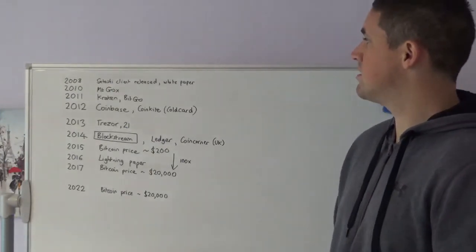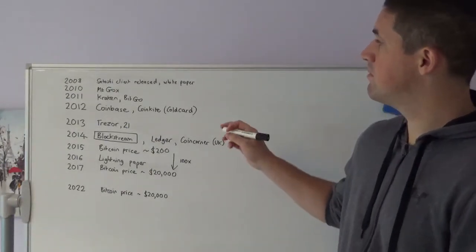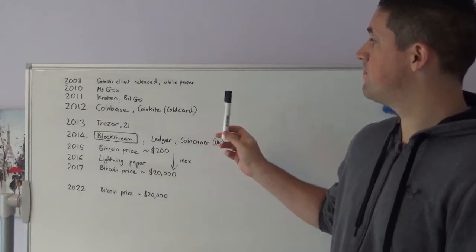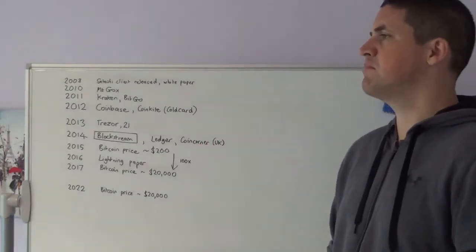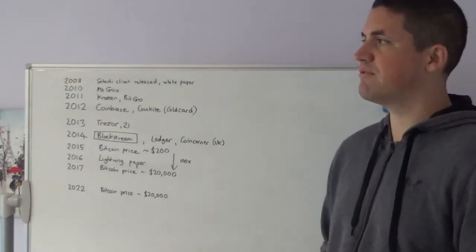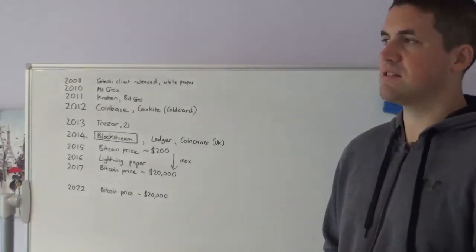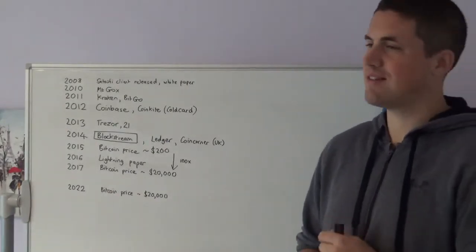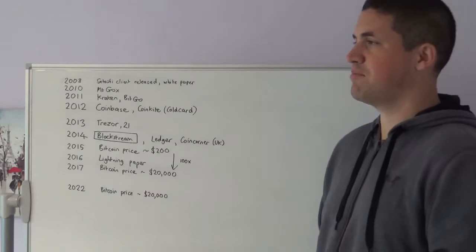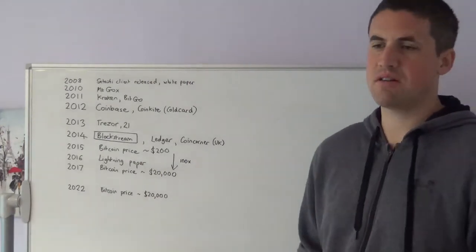But the exchanges that came in the next couple of years, the Krakens, the Coinbases, they learned the lessons from the mistakes Mt. Gox made. They took security a lot more seriously. They provided a much better user experience.